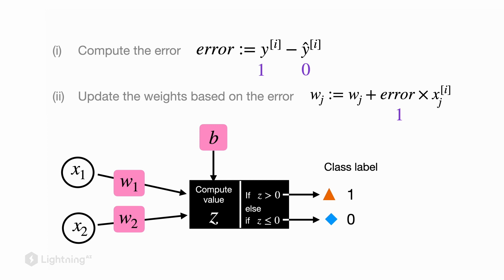This means we have to increase the weighted sum somehow, and we achieve this by making the weight larger. So in this case if you look at the equation above, we have now wj plus one times the feature value, which will push the weighted sum towards larger values.